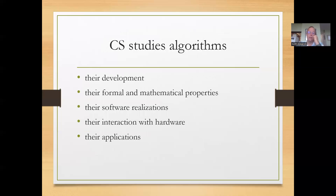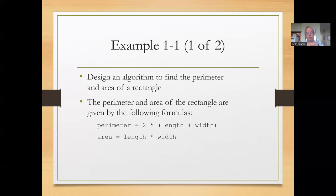So computer science studies algorithms. We look at their development, their formal mathematical properties, their software realizations, how they interact with hardware, and their applications.